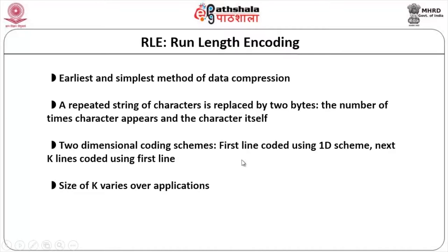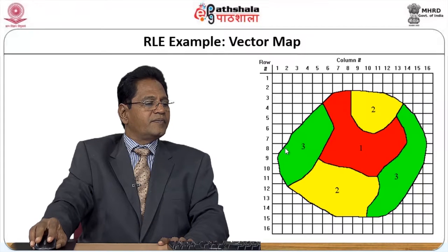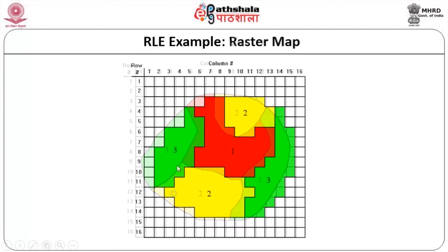Two-dimensional coding is done — the first line is coded using the ID scheme, and the next k lines are coded using the first line. The number of k lines depends upon the application type you are using it for. If you look at the RLE example for a vector map, you can see the smoothness of that vector map. The same thing when used in raster becomes coarser. How do you improve the smoothness?